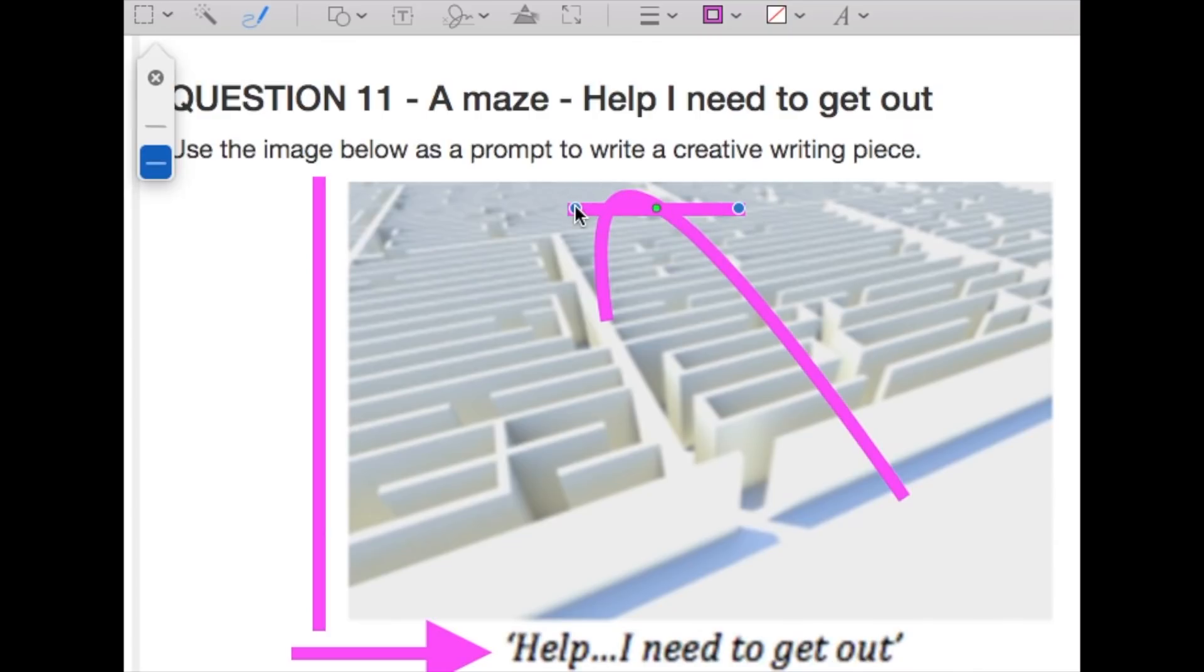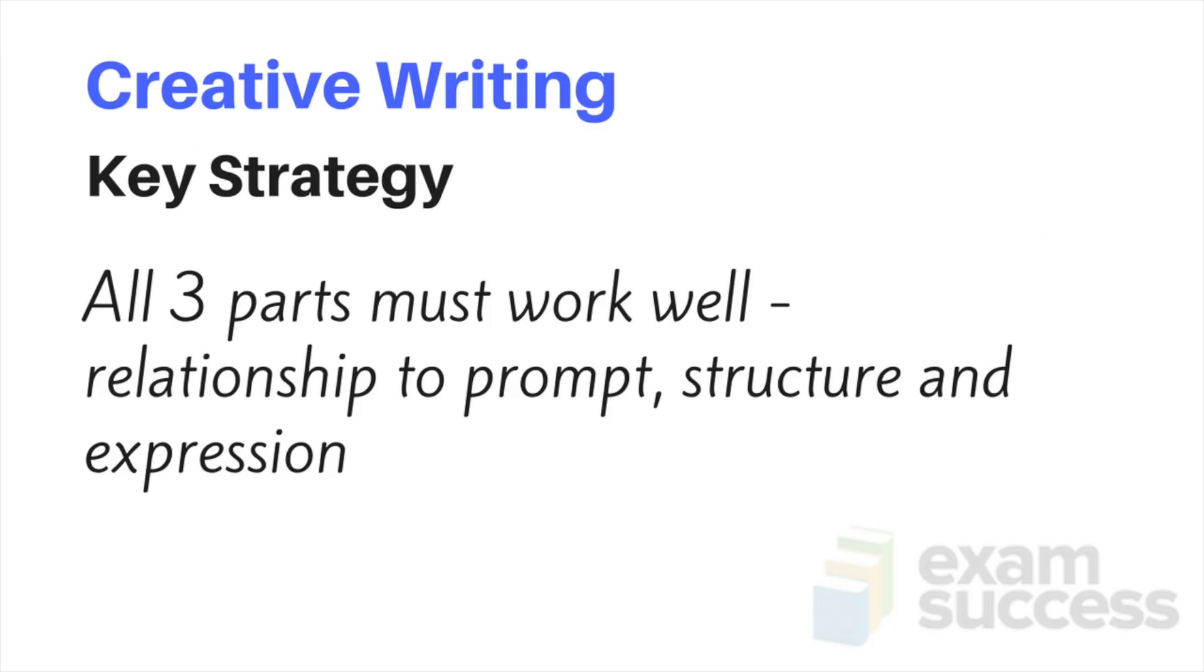The key strategy you should remember for creative writing is that all three parts must work well together. This means you need to relate to the prompt visually and for any text prompts. Make sure your structure is in order and make sure that you have a really good balance between showing and telling sentences.